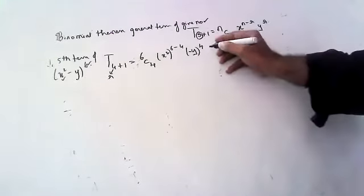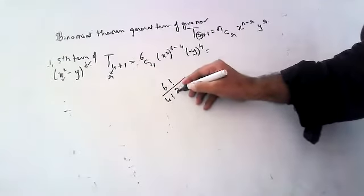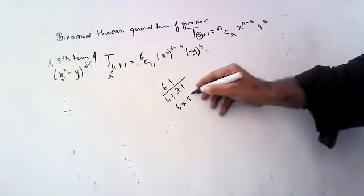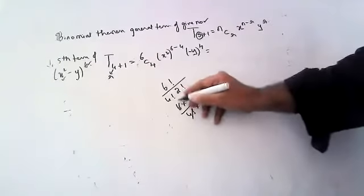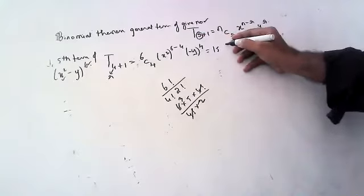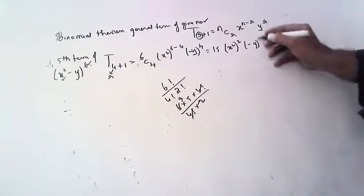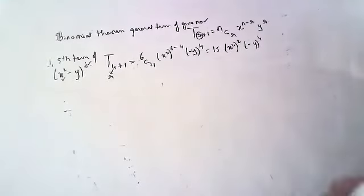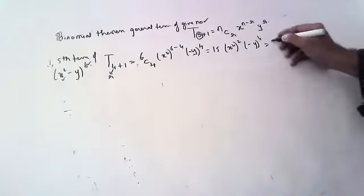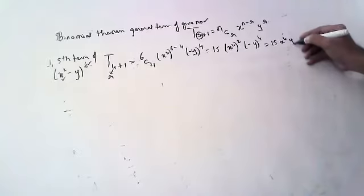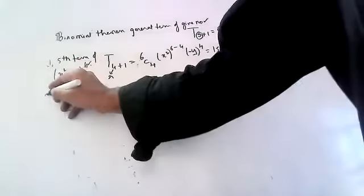To simplify: 6C4 means 6! / (4! · 2!) = (6 × 5 × 4!) / (4! × 2 × 1) = 15. So we get 15 · (x²)² · (-y)⁴ = 15x⁴y⁴. The minus becomes positive because the power is an even number.